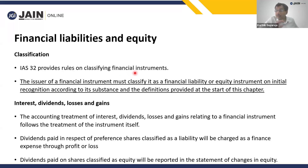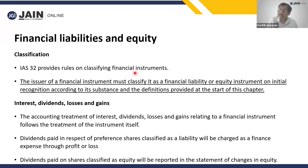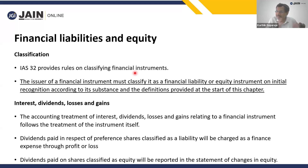In terms of classification, the standard starts with financial liabilities. Even from a conservatism perspective, the organization first tries to safeguard itself from a liability standpoint. So in the subject, we will first learn about financial liabilities, then move to financial assets. Once you understand financial liabilities thoroughly, financial assets are a cakewalk — they are the exact opposite.